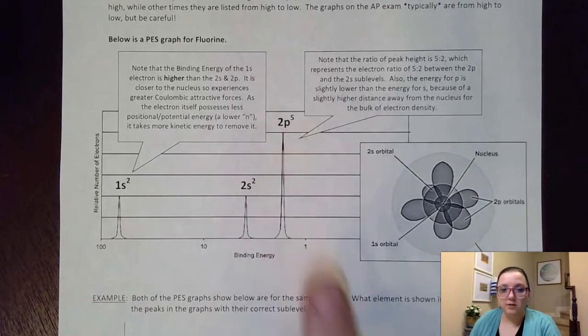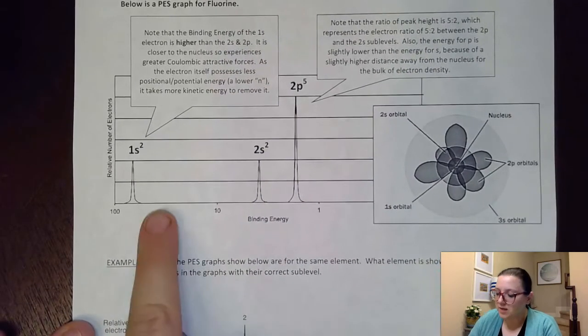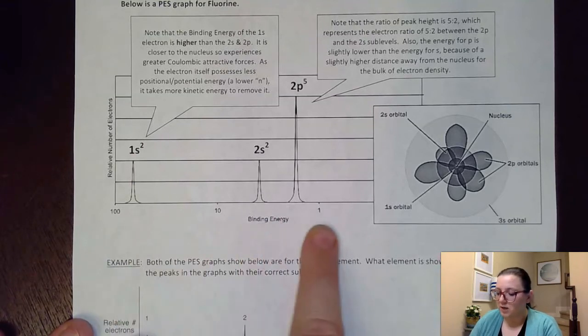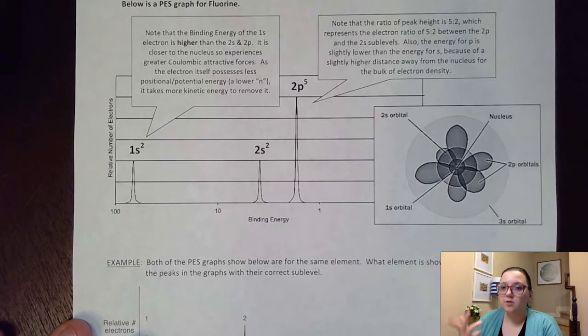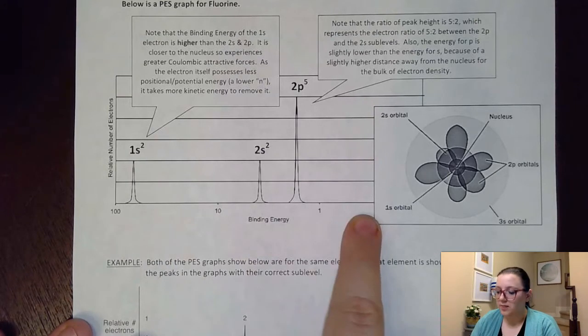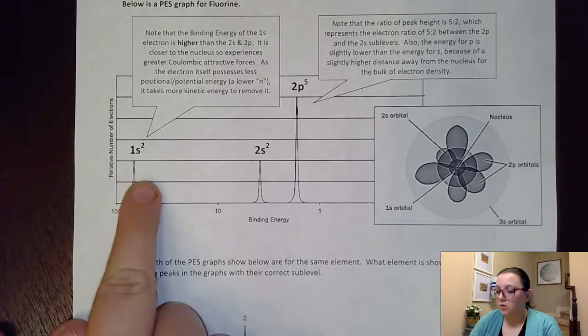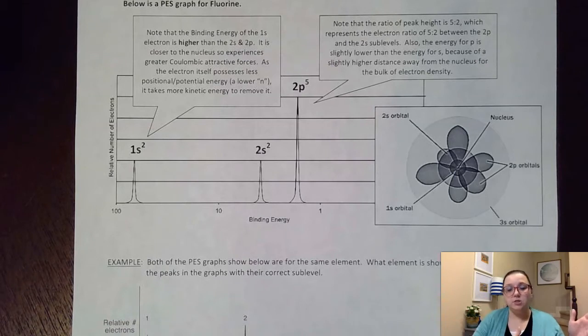You notice a couple things about it. First off, this one is pretty well labeled. But as you can see, these ones on the bottom, most of the time, they don't come with those lovely labels. We notice that we have binding energy down here. Sometimes it'll just say energy. This particular graph actually counts backwards. You notice it counts from 100 to 1. We have to be really careful on our graphs, which way they count. I have seen questions where they could count either way. So we'll see an example here in just a minute where it's the same graph, just printed different ways. So we need to always look at that. And then we notice we have a relative number of electrons here. So this particular graph had three peaks, which is representative of three different sublevels, three different groups of electrons that had a different binding energy to them.